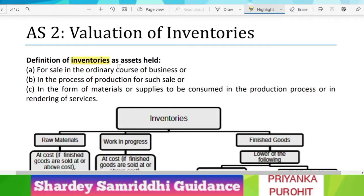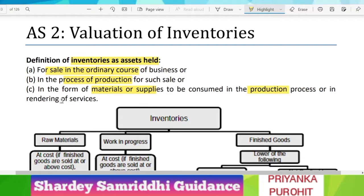First of all, we will look into the definition of assets held. What are inventories as assets held? It can be of 3 categories: for sale in ordinary course of business; in the process of production, that is WIP for such sale; and in the form of materials or supplies to be consumed in the production process or in rendering of services. This is the definition we have to put in case an AS2 question arises in the exam.